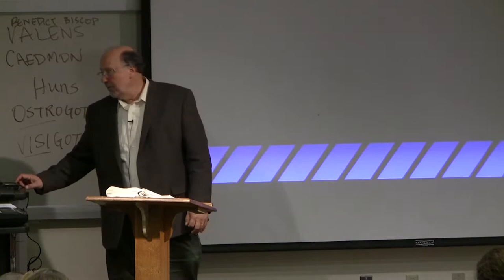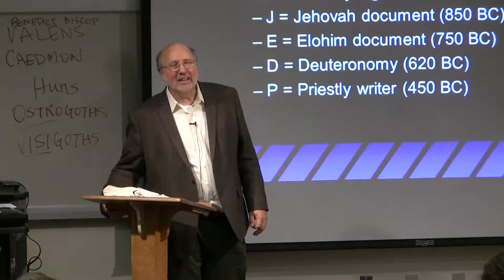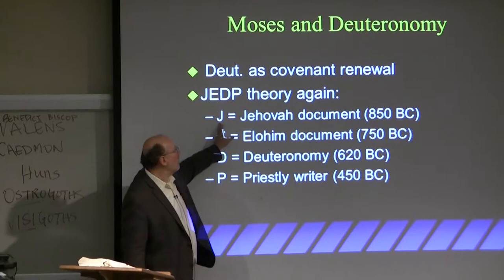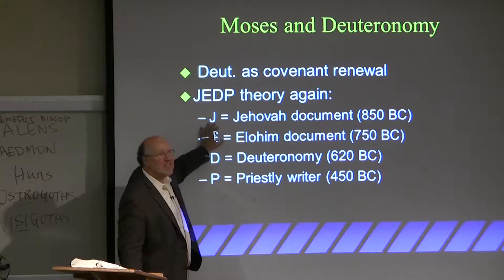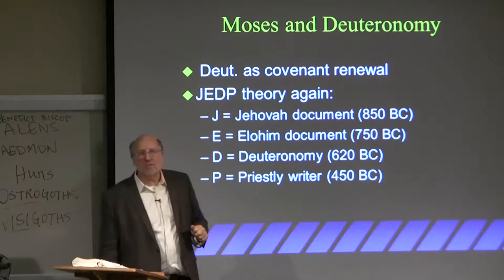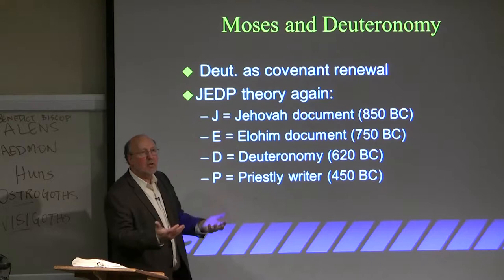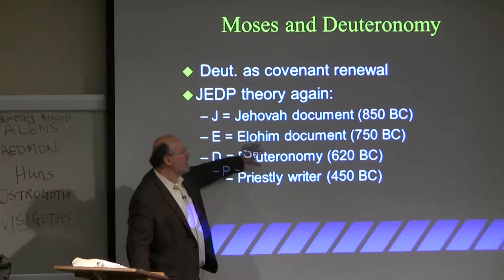Does anybody remember the old J-E-D-P theory? Deuteronomy is big in this theory. The J-E-D-P theory says Moses did not write the Pentateuch. Instead, you had a J-writer who liked the name Jehovah, so he wrote using Jehovah or Yahweh — they called it the J-document. He wrote about 850 B.C., which is about 150 years after the time of David, about 500 years after Moses. Then you had the E-writer who wrote another part of the Pentateuch. This is how critics see the Bible was put together.